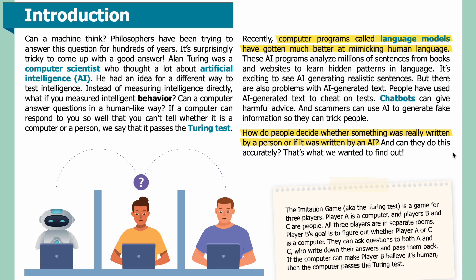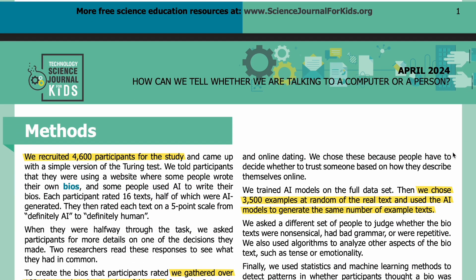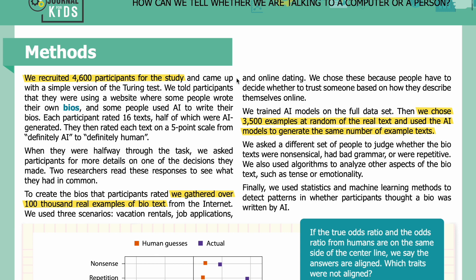That's what we wanted to find out. The Imitation Game, also known as the Turing test, is a game for three players. Player A is a computer, and players B and C are people — all in separate rooms. Player B's goal is to figure out whether player A or C is a computer. They can ask questions to both A and C, who write down their answers and pass them back. If the computer can make player B believe it's human, then the computer passes the Turing test.